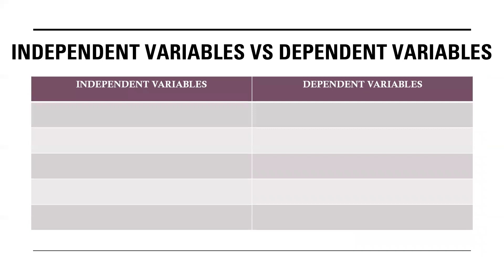First, independent variables. An independent variable is a variable which the researcher tries to manipulate or change, and we think it has a direct effect on the dependent variables. The researcher is looking for what effects on the dependent variables happen due to changing the independent variables. In the research world, the researcher always tries to see what changes happen in the dependent variables by changing the independent variable.